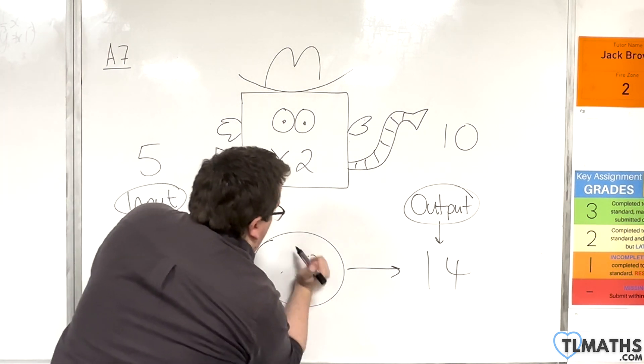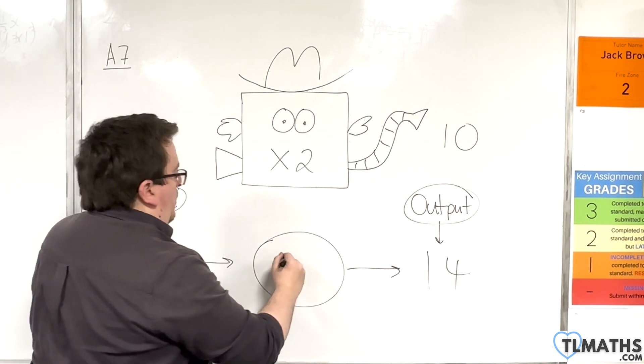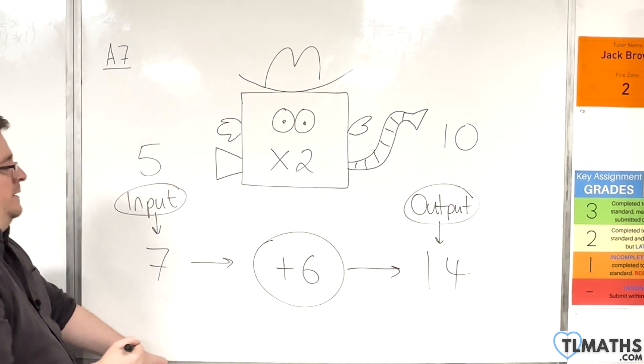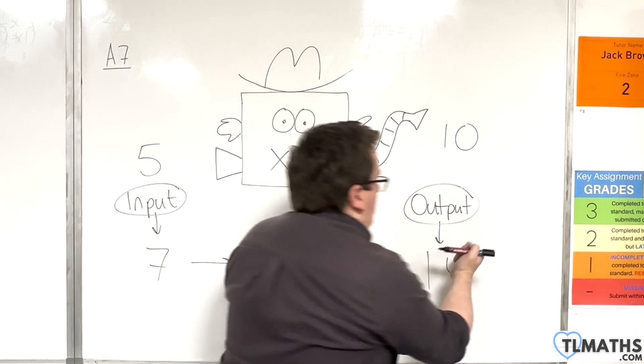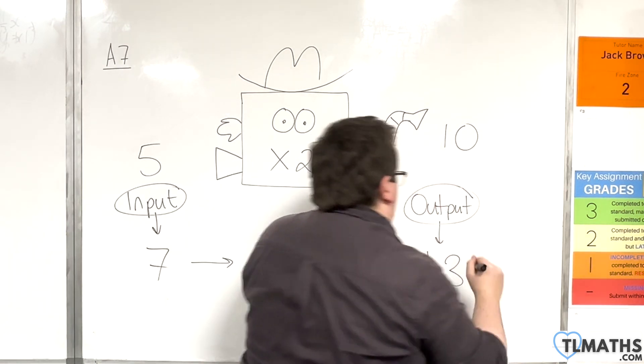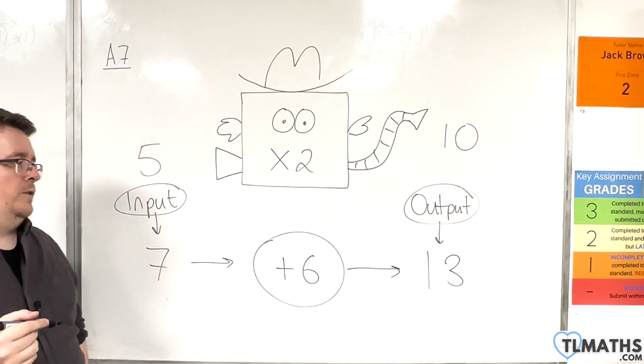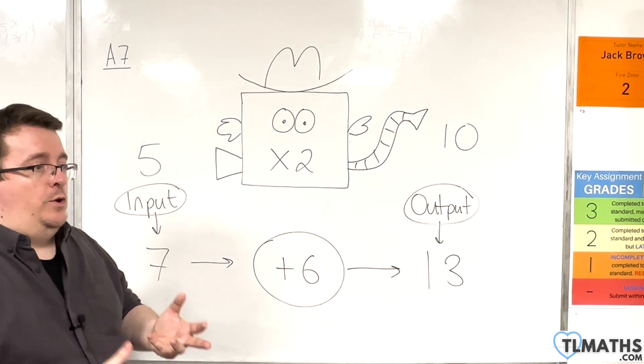And, of course, we could change this number of times by two. We could put plus six on there. And so, you'd have seven plus six is 13. So, that's all that the function machine is doing.